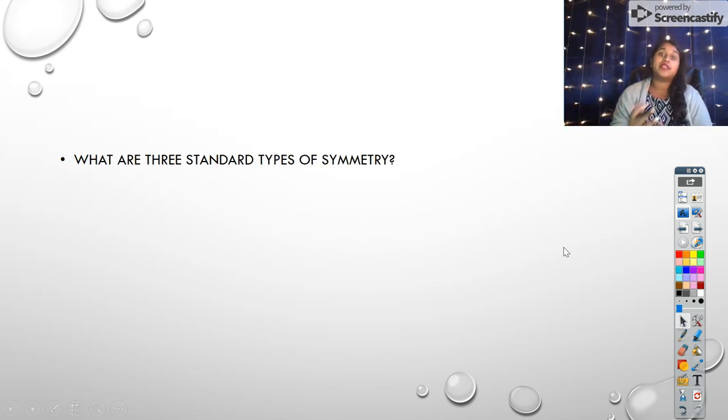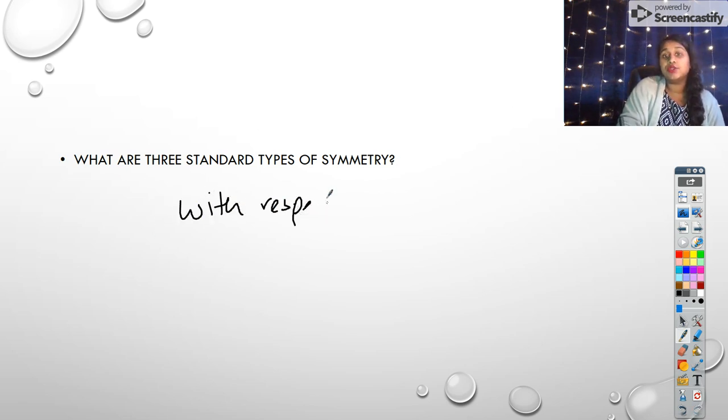Okay, what are the three standard types of symmetry? We just talked about it, but how do we say that? We say the phrase, with respect to, and whatever it is, the x-axis, the y-axis, and the origin.